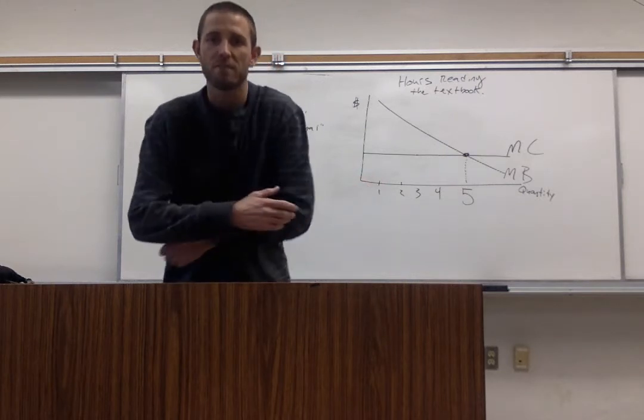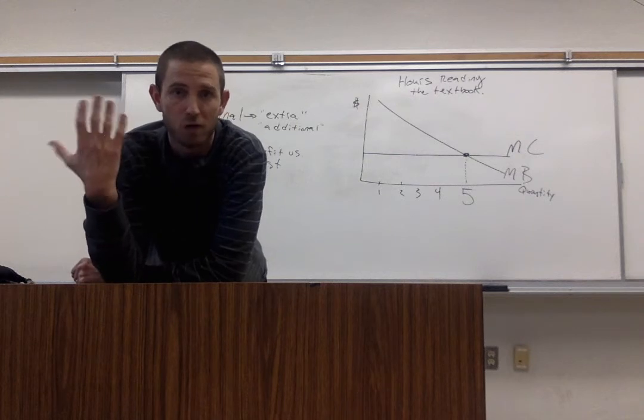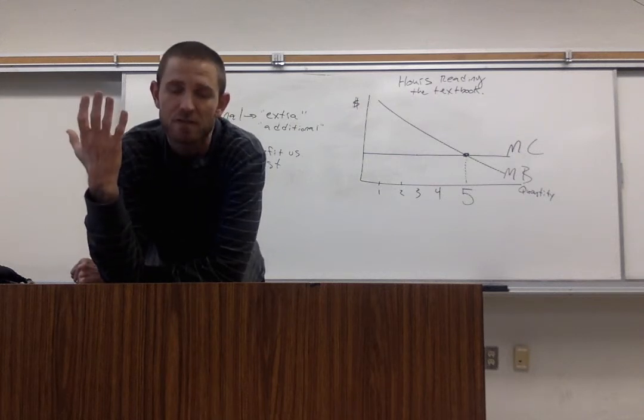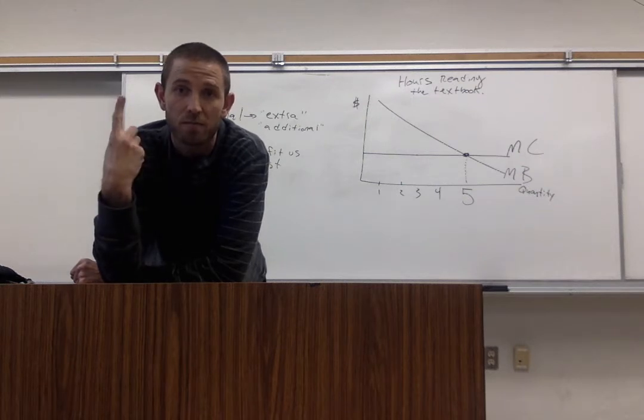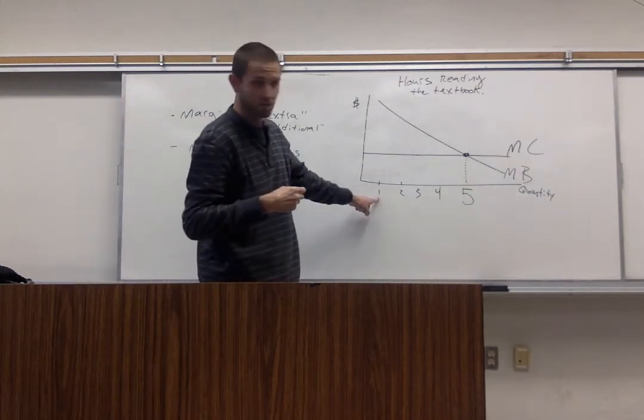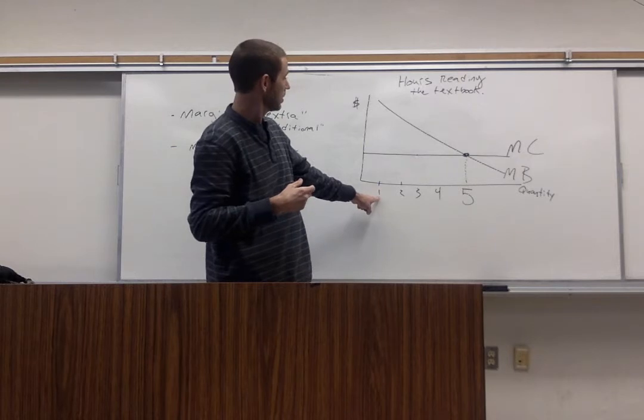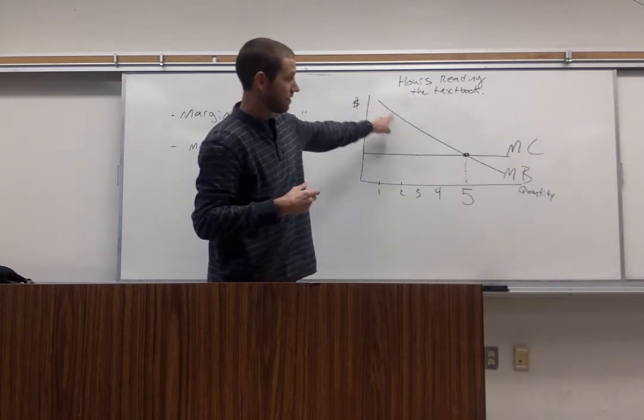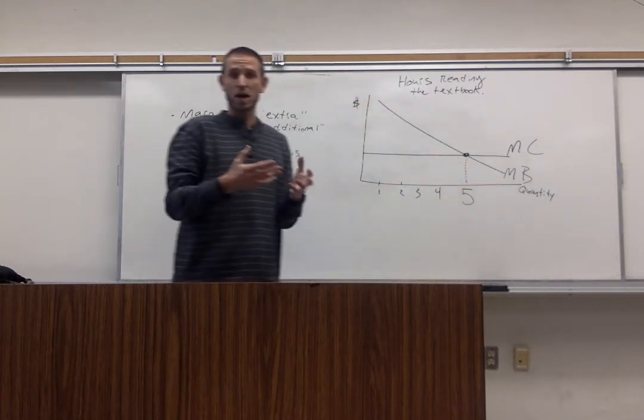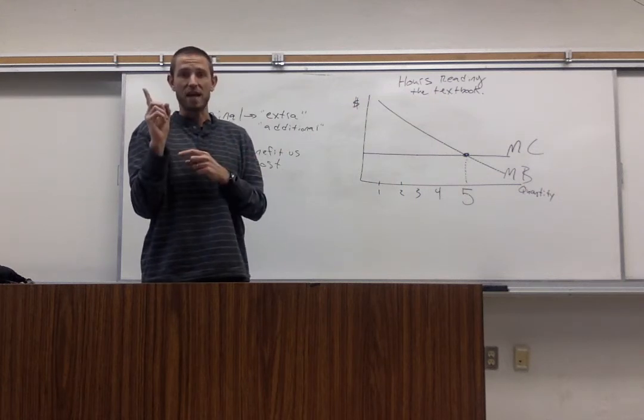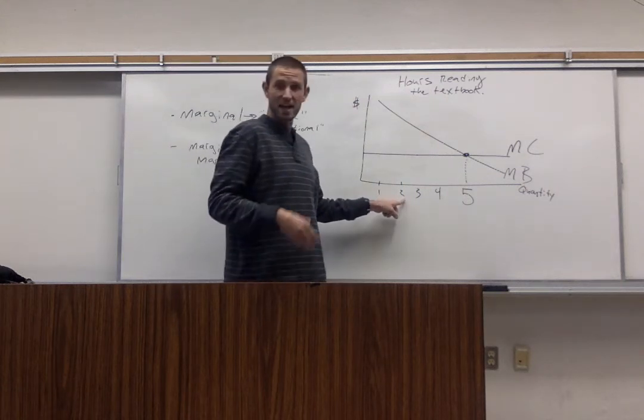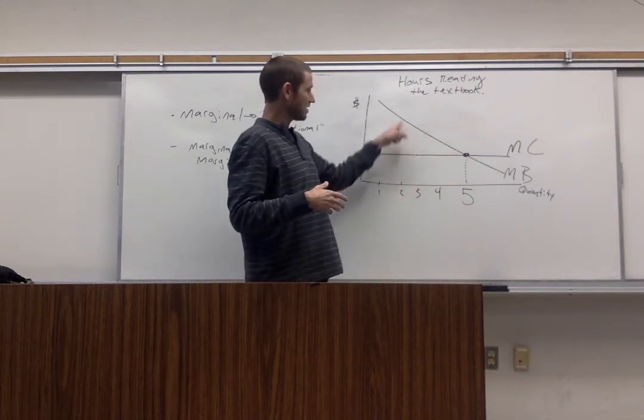So the marginal benefit would represent how much more knowledge you have, how much extra benefit you get every time you read the textbook for one more hour. For the first hour of reading the book, however high that marginal benefit curve is, that's showing you the benefit you get from the activity, from just that hour. Marginal benefit of the second hour is measured by this height and so on.